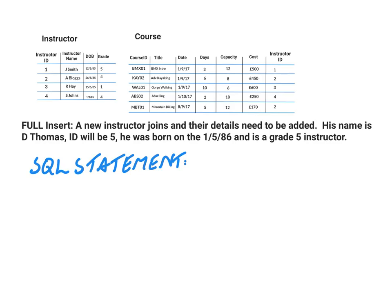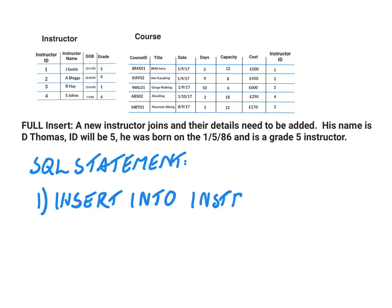If we look at the two tables, the scenario we're going to use is that a new instructor is joining and we've got to add their details. The name is D. Thomas, his ID will be 5, his date of birth is the 1st of May 1986, and he is a grade 5 instructor. The first step is to state which table you're putting in the new value, so we would say INSERT INTO and the table is called instructor, because we want to make sure that we're putting it into this table.